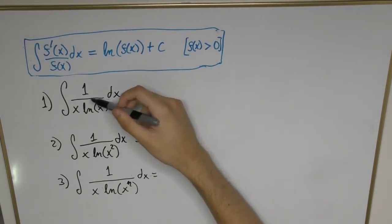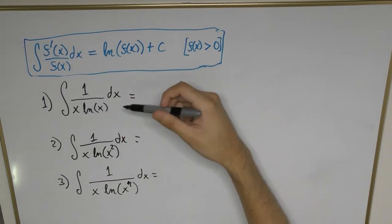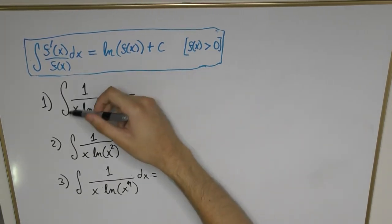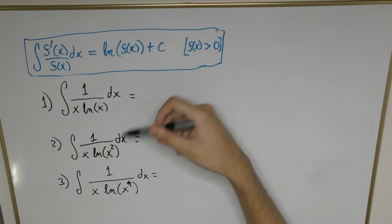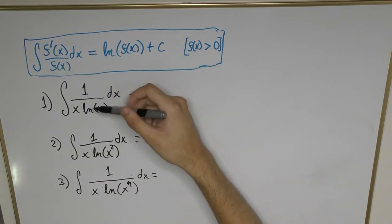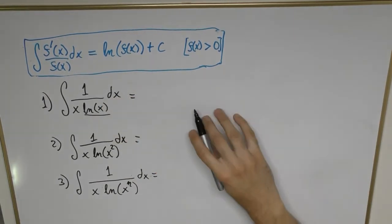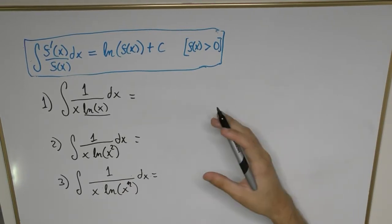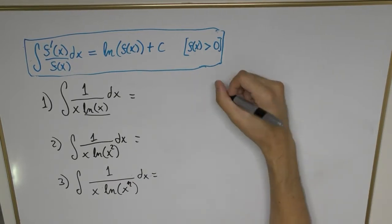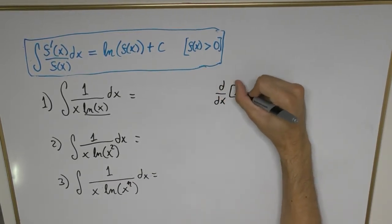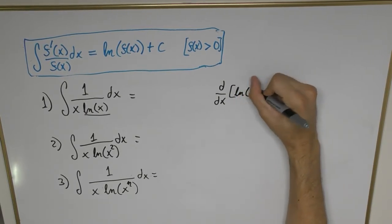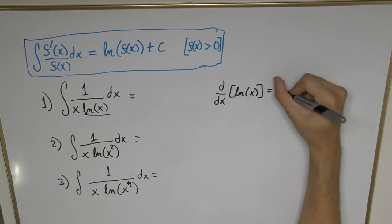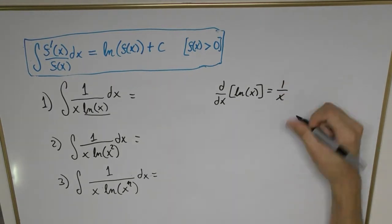Now for the first example, we're going to look at this function and immediately we notice that if we differentiate the entire denominator, we're not going to get one. So let's just look at one of the functions we have here. Let's take the more complicated function as an initial guess. We're going to differentiate d/dx of ln(x), and we know that's going to equal 1/x.